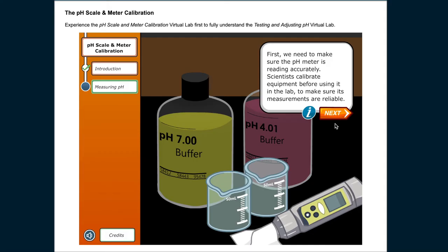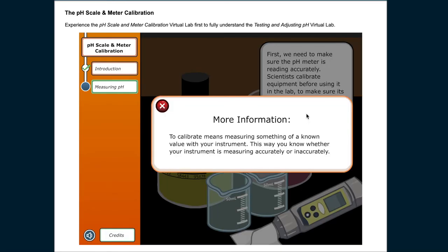First, we need to make sure the pH meter is reading accurately. Scientists calibrate equipment before using it in the lab to make sure its measurements are reliable. To calibrate means measuring something of a known value with your instrument. This way, you know whether your instrument is measuring accurately or inaccurately.